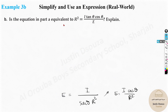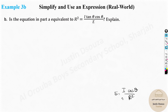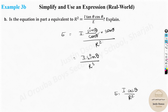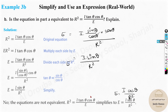Now check whether the formula E = I · cos θ / R² is equivalent to another given expression. Simplifying the second expression by substituting tan θ = sin θ / cos θ and multiplying through gives E = I · sin θ / R². Since one expression has cos θ and the other has sin θ, the two equations are not equal to each other.